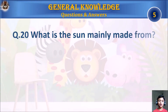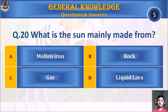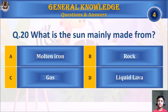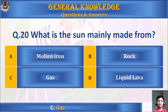Question 20: What is the Sun mainly made from? A. Molten iron, B. Rock, C. Gas, or D. Liquid lava. Your time starts. The answer is C. Gas.